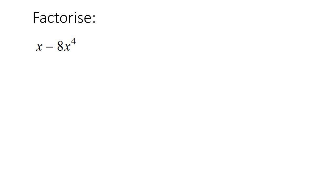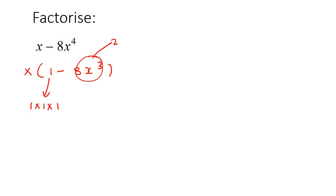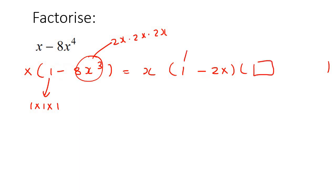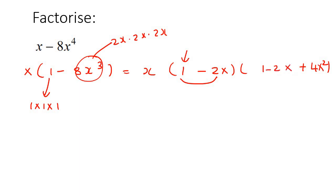Here's our next one. We always take out a common factor first, so that common factor would be x, and then what you're left with is 1 take away 8x³. Now 1 is 1 times 1 times 1, and 2x times 2x times 2x gives 8x³. So I open up a small bracket and a larger bracket, writing 1 minus 2x in the small bracket, keeping the negative. I square 1 to get 1, square 2x to get 4x squared keeping it positive, and in the middle multiply them to get negative 2x but switch the sign, giving 1 plus 2x plus 4x squared.